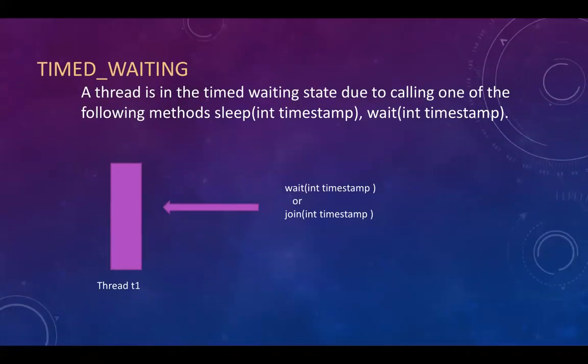Timed waiting is similar to the waiting state, but here a time limit is specified with the method call. For that specific period of time the thread will be waiting, and once the time completes the thread moves back into the runnable or running state.